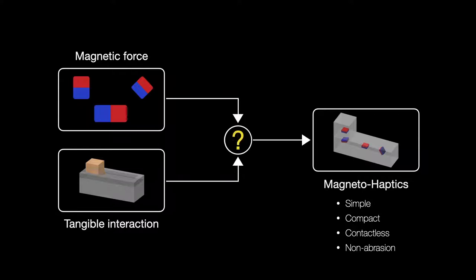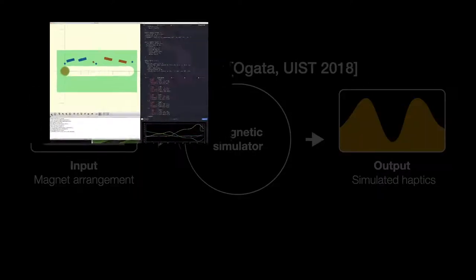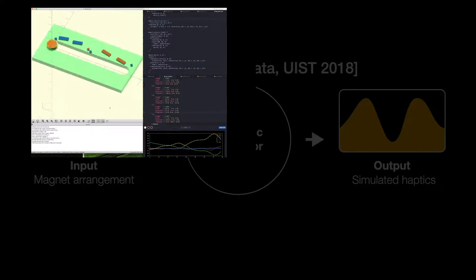However, it is difficult to manually design how magnets should be embedded in the object because the relationship between the magnetic force and arrangement of the magnet is non-intuitive. In our previous work, Magnet Haptics, we established the forward design of this problem by simulating the magnetic force from the complicated magnet arrangement.